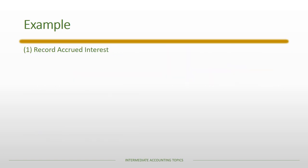The first thing we're going to do is accrue interest. There are two pieces. First, there's the interest payment that is owed according to the contract. The bond rate was six percent applied to the par value of $600,000, and during 2020, ten months had elapsed since the last interest payment date, so we accrue ten-twelfths, which totals $30,000.